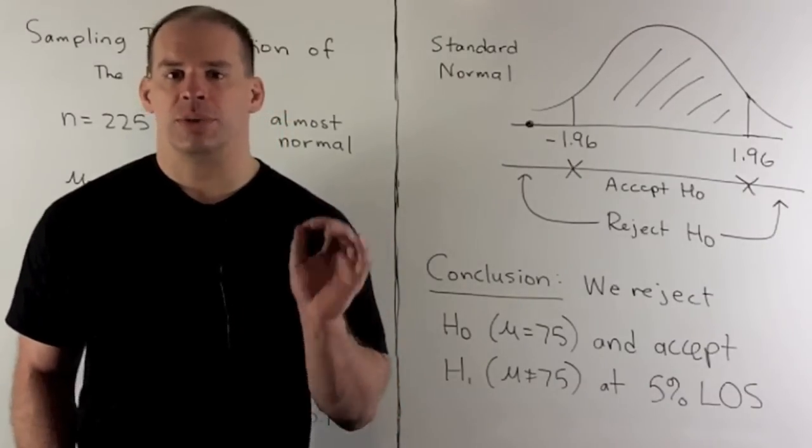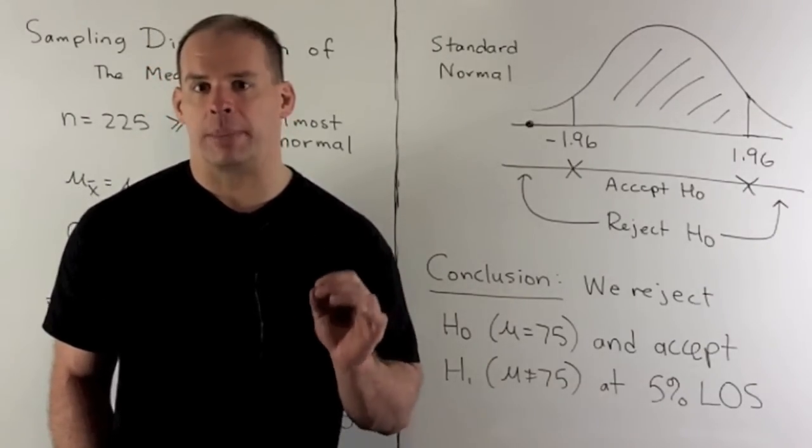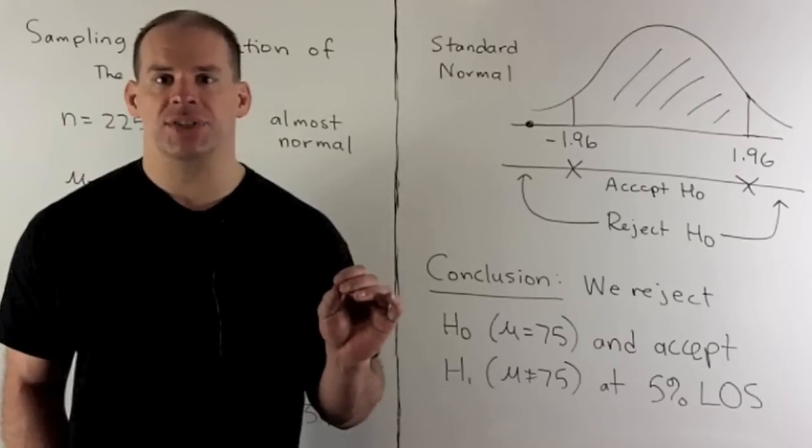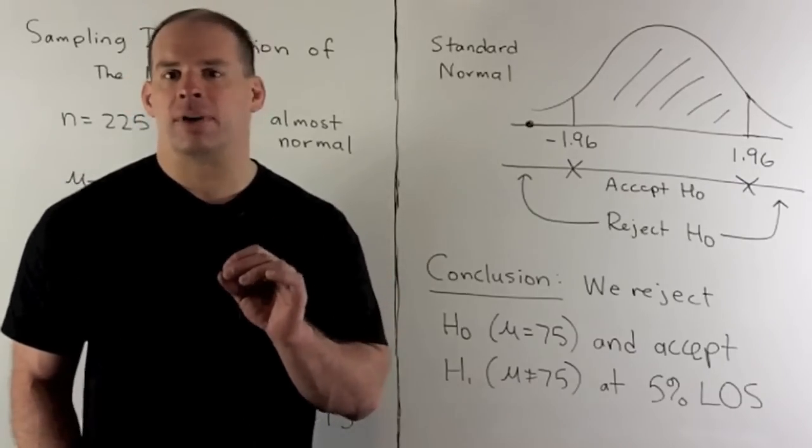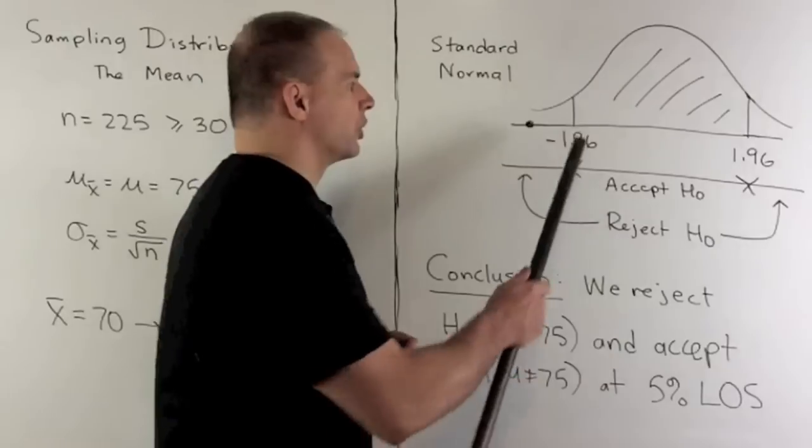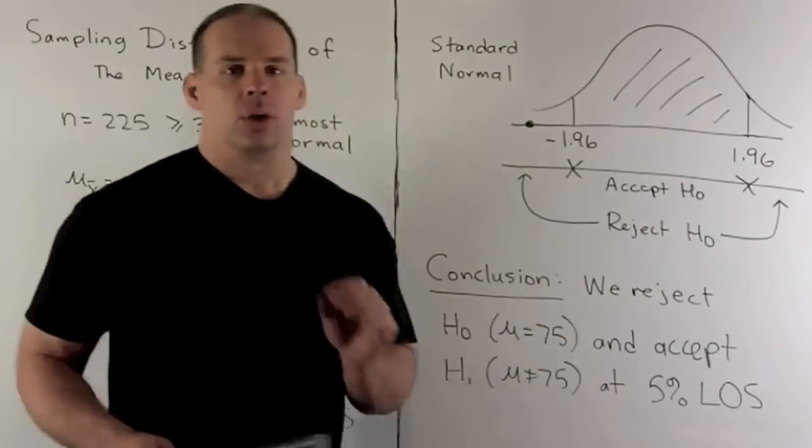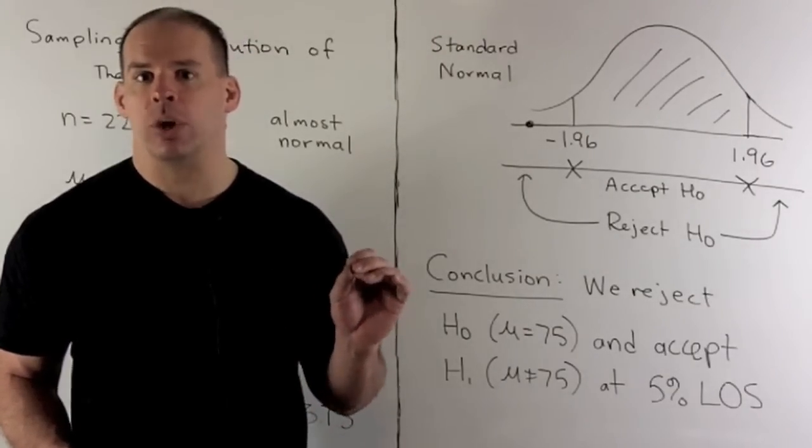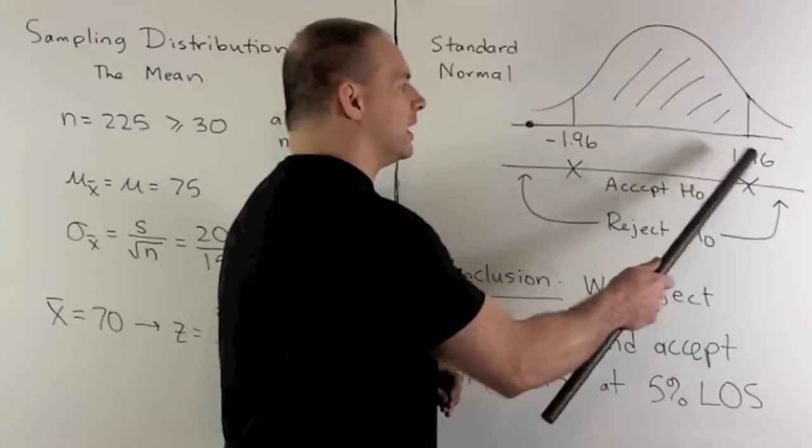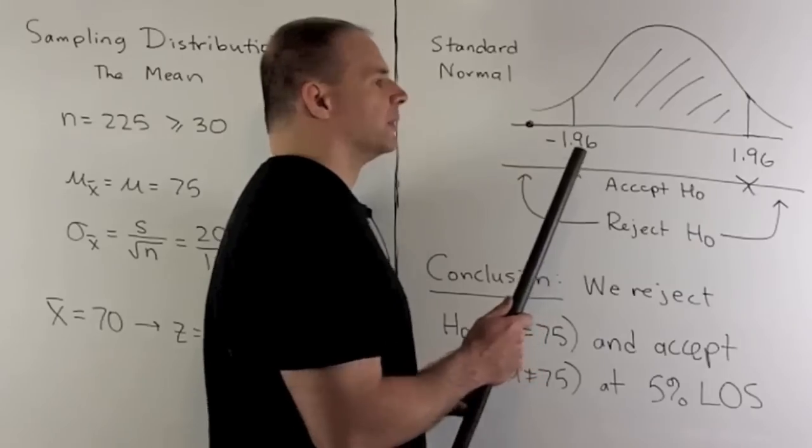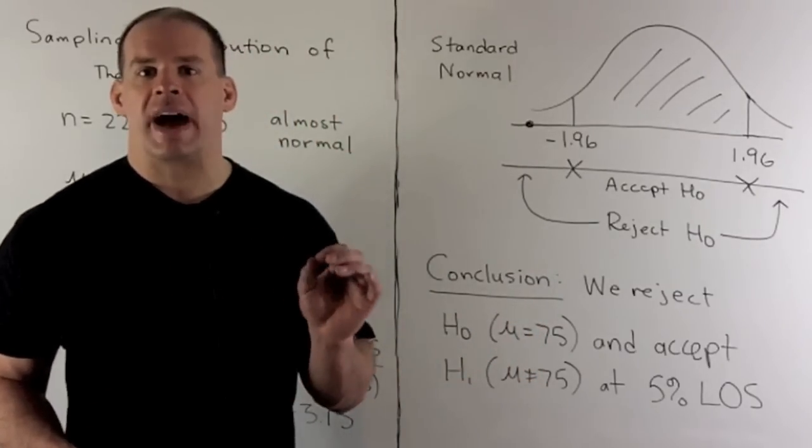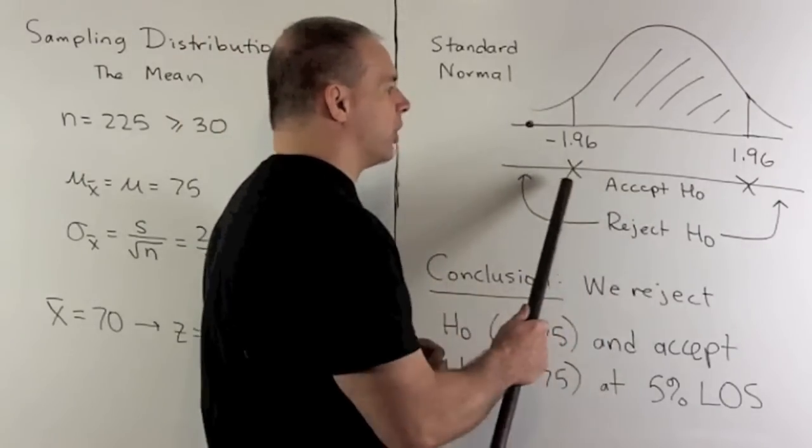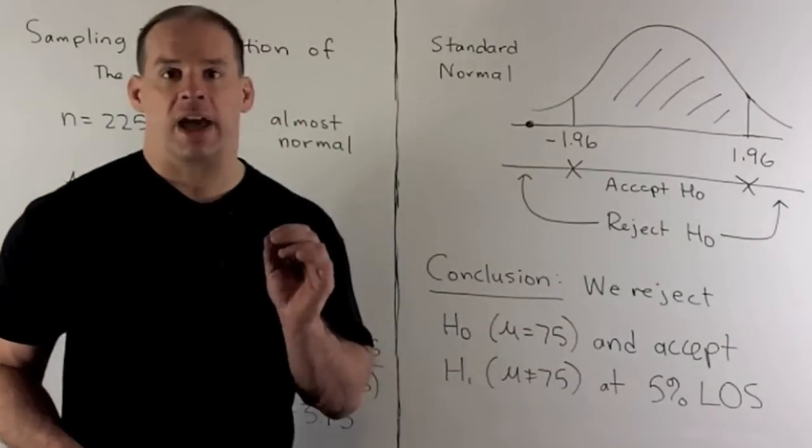The next step, we set up our acceptance and rejection regions for the null hypothesis. In our case, we have a 95% level of confidence. So that means the area above our acceptance region is going to be 0.95. We have the standard normal distribution. So that means we're going to use z values for the endpoints, 1.96 and -1.96. So we have area 0.025 in each tail. So we have the acceptance region between our endpoints. The rejection region is everything else.